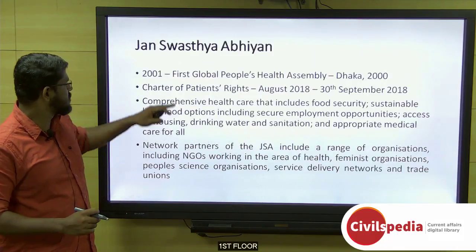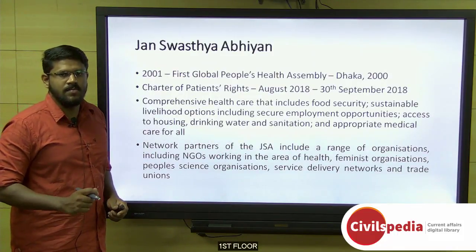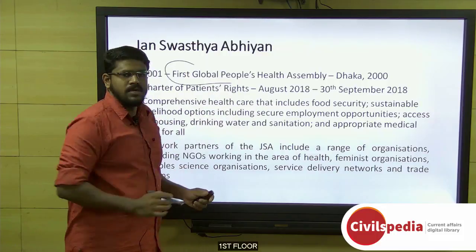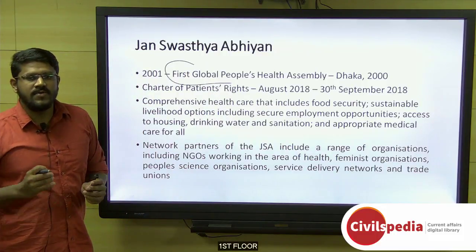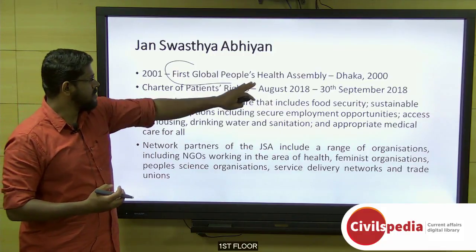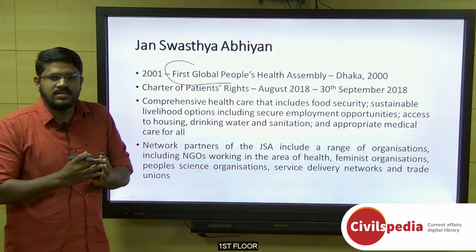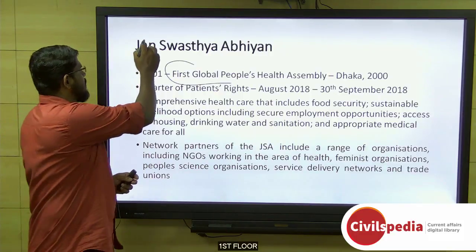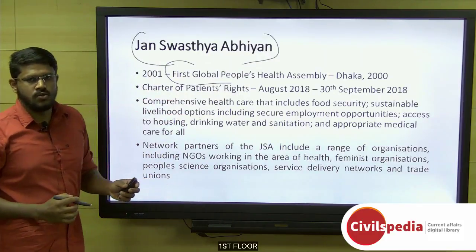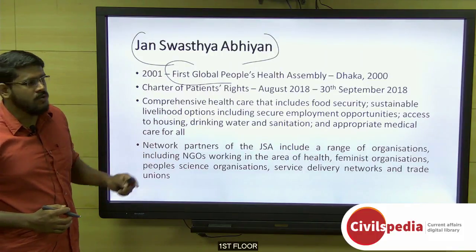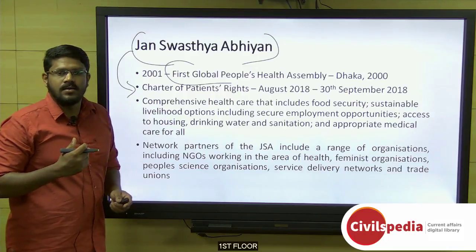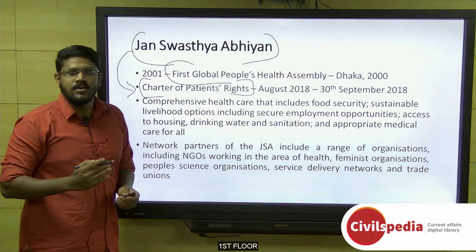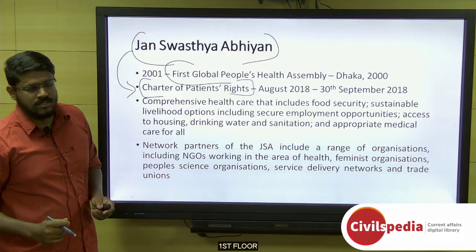Next, we discuss Jan Swasthya Abhiyan. In the year 2000, in Dhaka, the first Global People's Health Assembly was held. Several networks in India worked to organize this assembly, and around 18 such networks came together in 2001 to form Jan Swasthya Abhiyan. It was recently in the news because this organization was asking the government to implement the Charter of Patients' Rights prepared by the National Human Rights Commission.